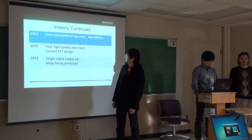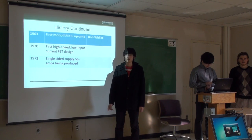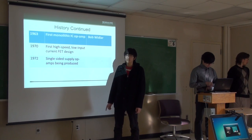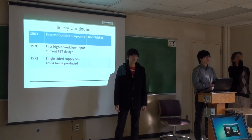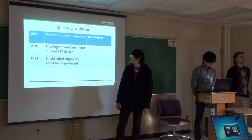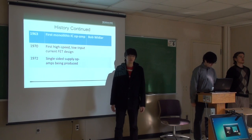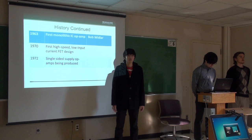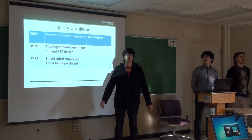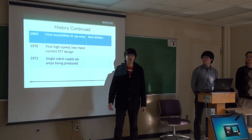The first monolithic IC op-amp was designed by Bob Widlar and was called the 702, released in 1963. A monolithic IC op-amp, as opposed to a discrete IC op-amp, consists of only one chip. Almost all modern op-amps are monolithic IC op-amps. High-speed, low-input-current op-amps were achieved using FET design in 1970, and by the 1980s, FET design was replaced by MOSFET, improving performance even further.